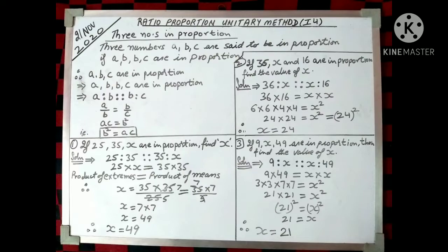In the last class, we understood that if there are four numbers a, b, c, d in proportion, then a is to b is equal to c is to d. Now today, we will learn how to solve questions if we have three numbers in proportion. Three numbers a, b, c are said to be in proportion if a, b, b, c are in proportion.